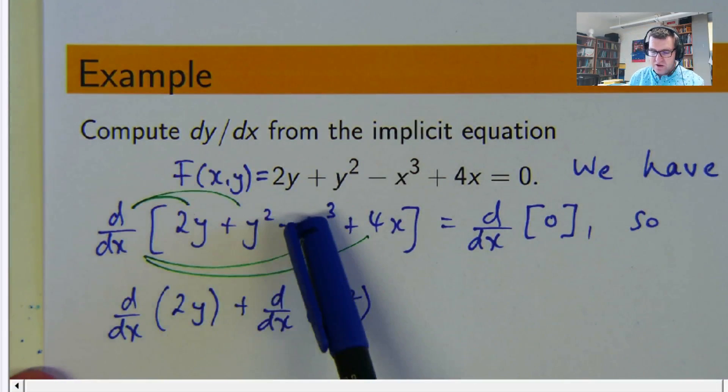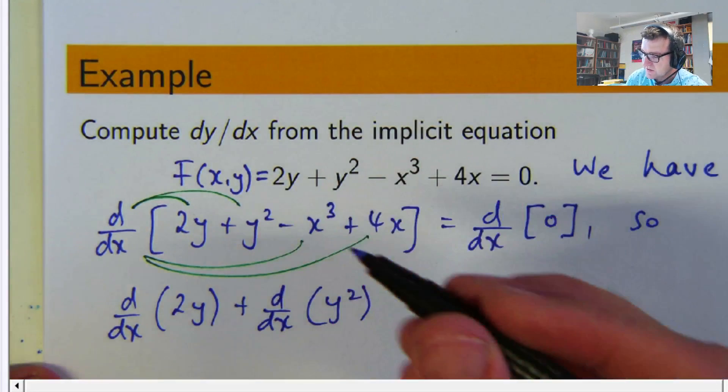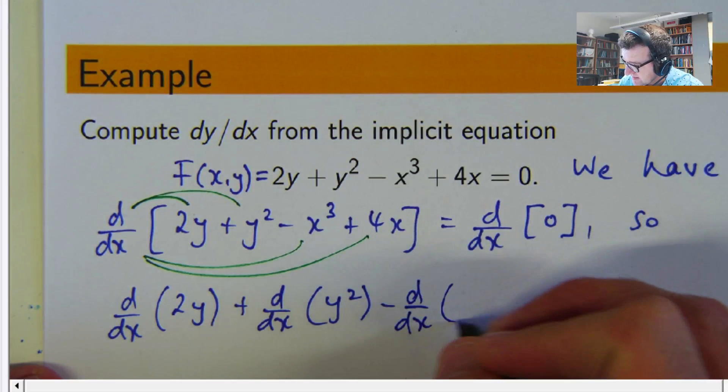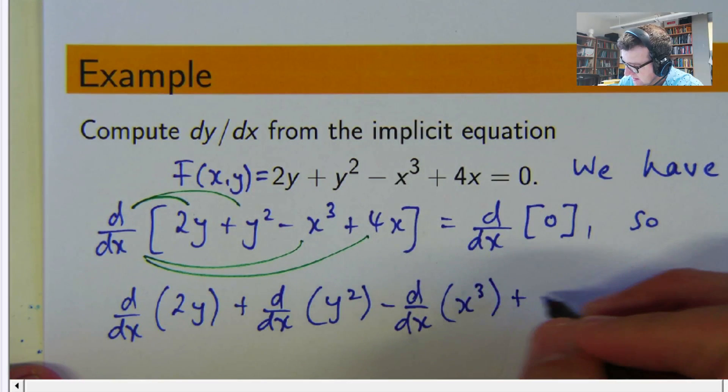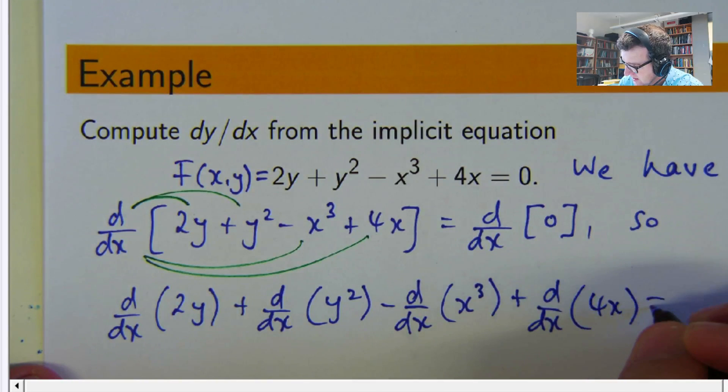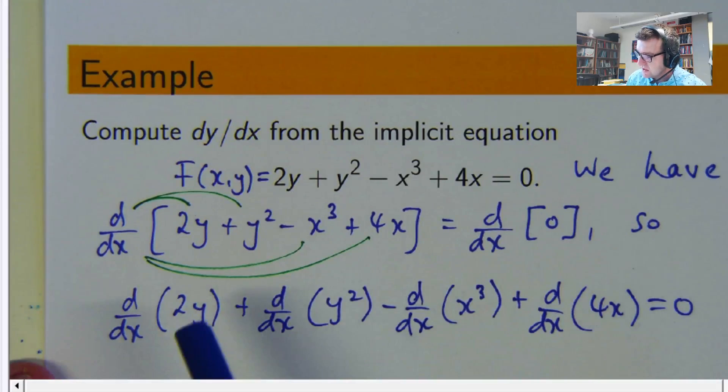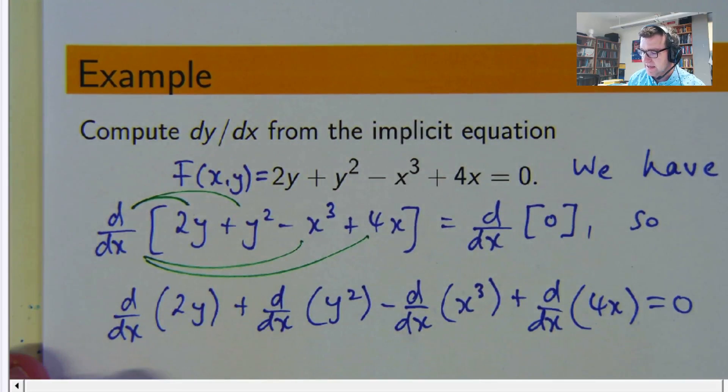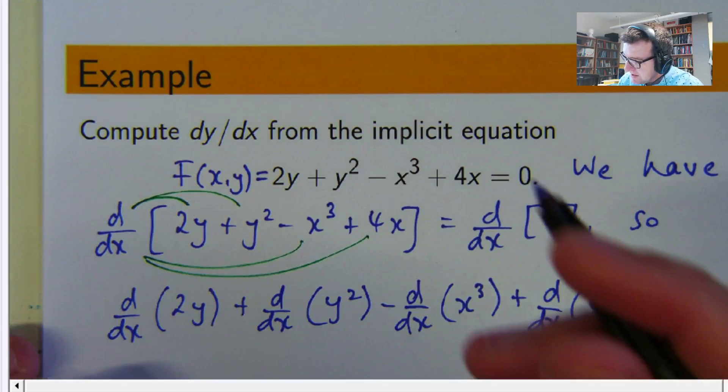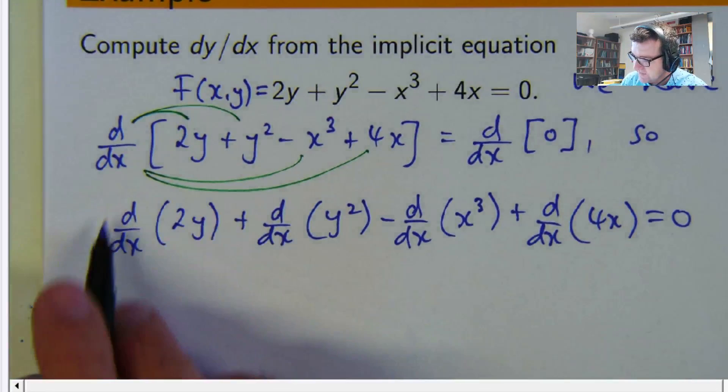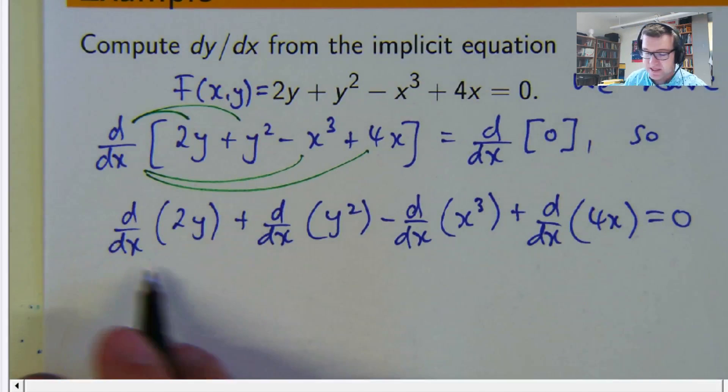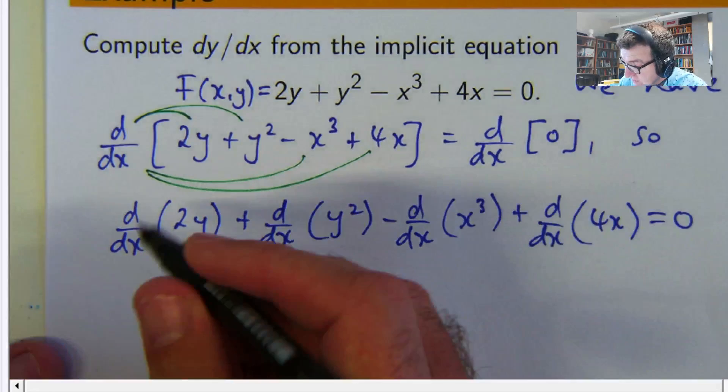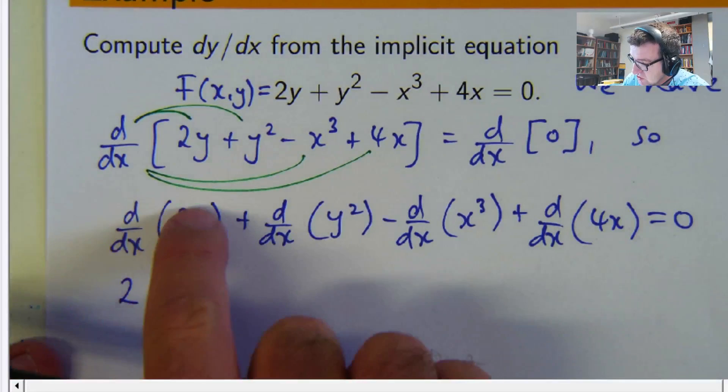Okay so what's the derivative of negative x cubed? Well it's going to be something like negative 3x squared. So that one's easy to calculate. So let's write for example the second term because the first term is just two times dy dx so that's easy.